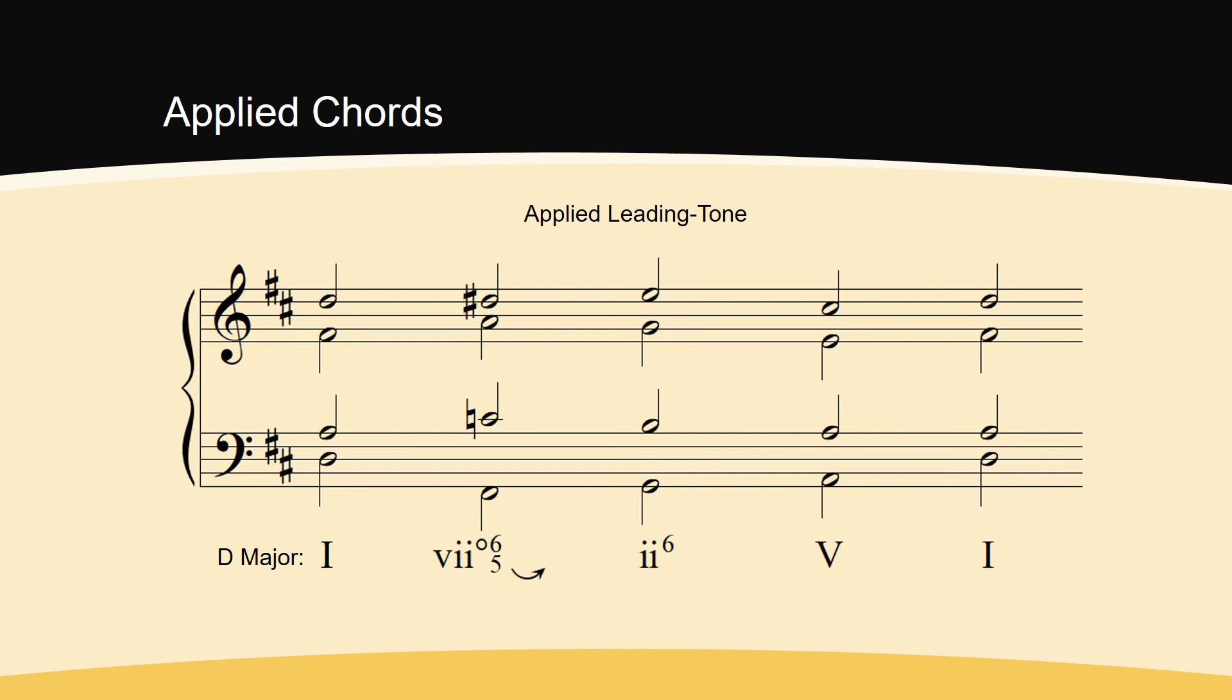An applied leading tone chord is built on the temporary leading tone of the tonicization. In this case, our temporary tonic chord is built on the pitch E, and the applied leading tone chord is built on the temporary leading tone of E, D sharp. Applied leading tone chords can be diminished triads, half diminished 7th chords, or fully diminished 7th chords. In this case, the applied leading tone chord is fully diminished. A second chromatic alteration was needed to make this chord quality.